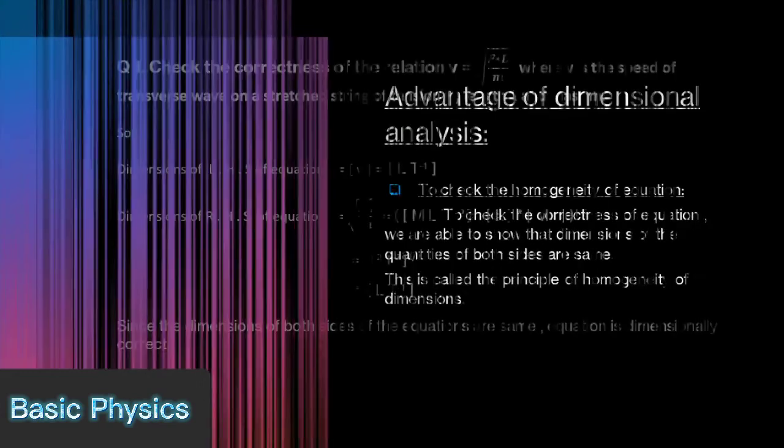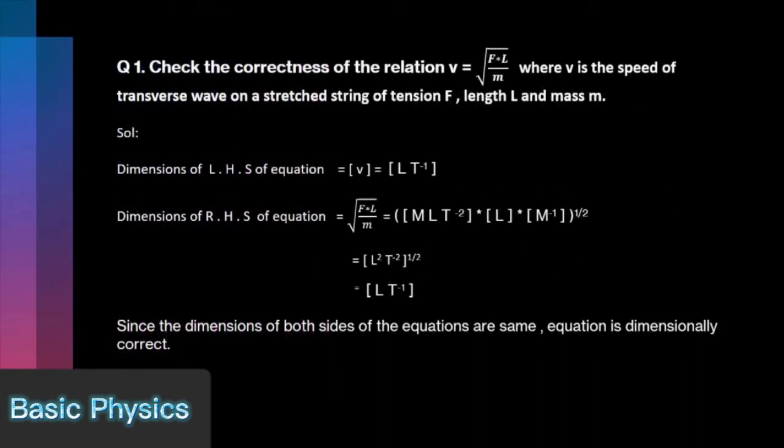To check the correctness of relation: V is equal to under root F multiply L by M, where V be the speed of transverse wave on a stretched string of tension F, L be its length, and M is its mass.